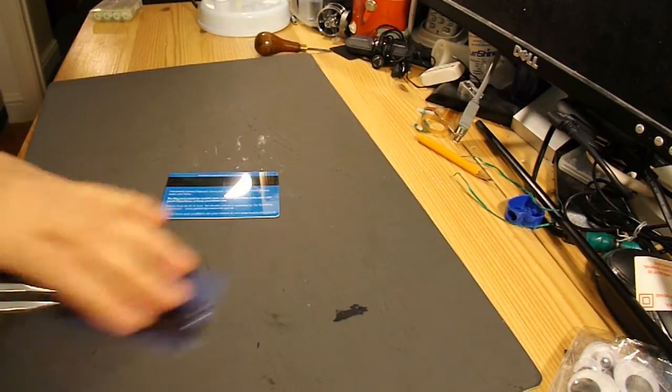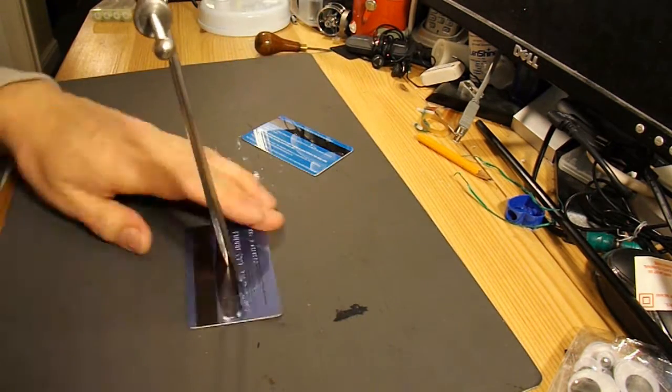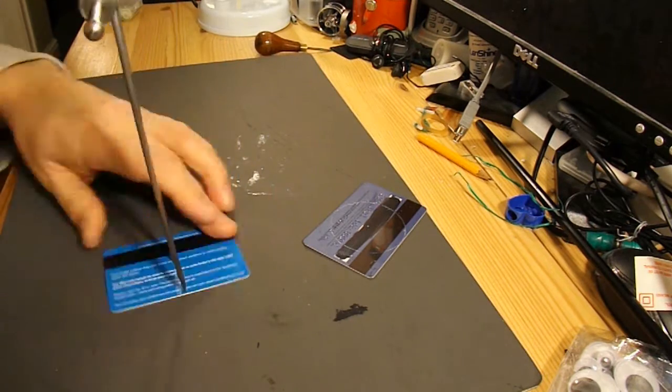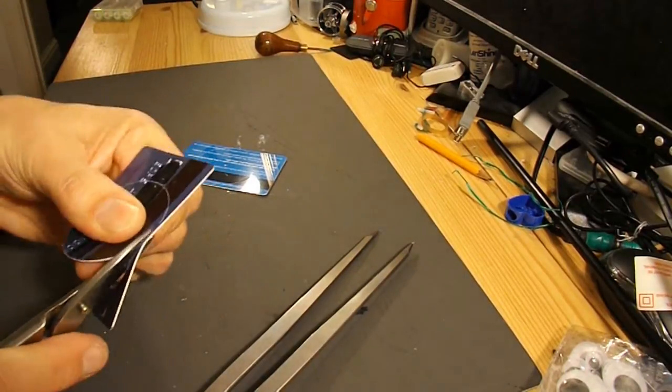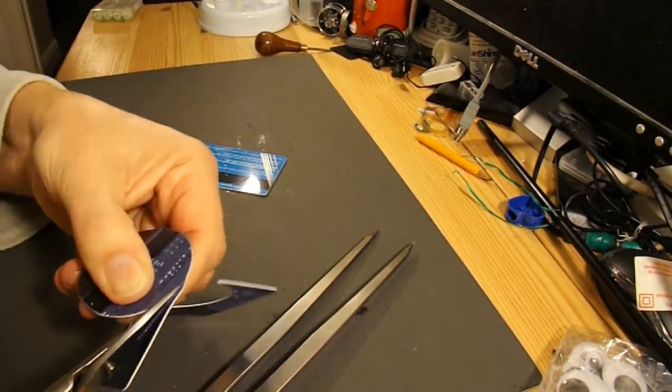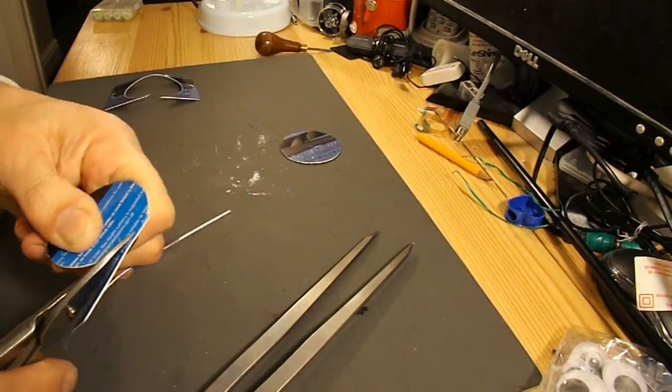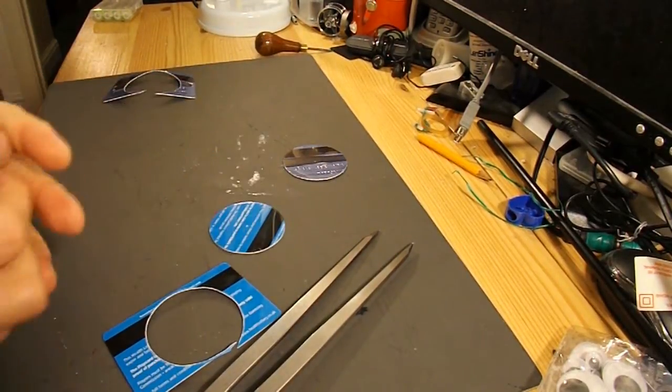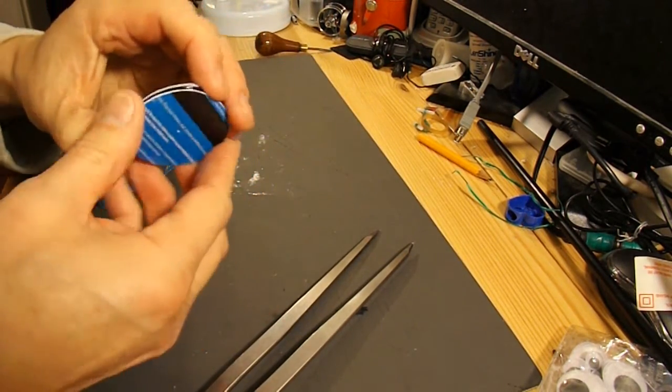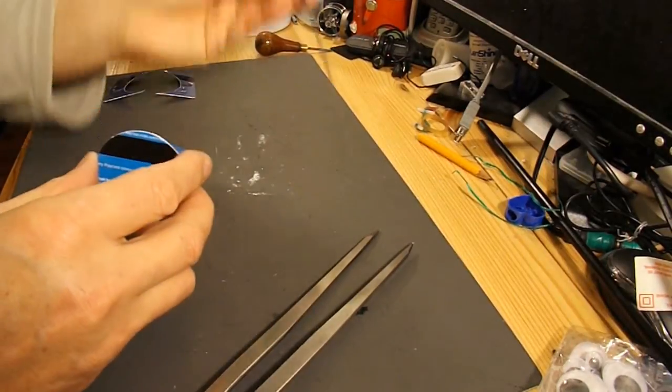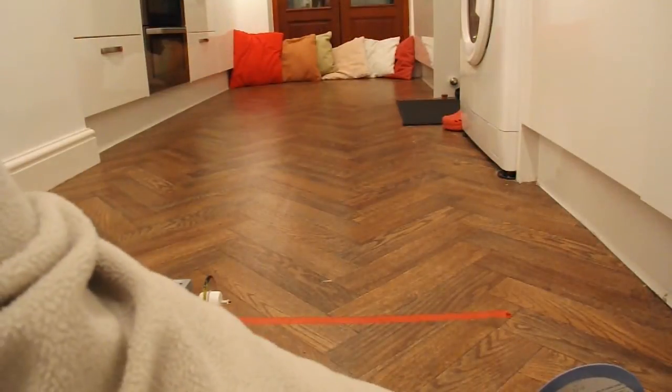Right, we'll make the front wheels out of some old store cards. OK, that's our two wheels. Just need to make the holes in the center a little bit bigger, and I'll put them on the bicycle spoke. Not that one, that's a bit bent.